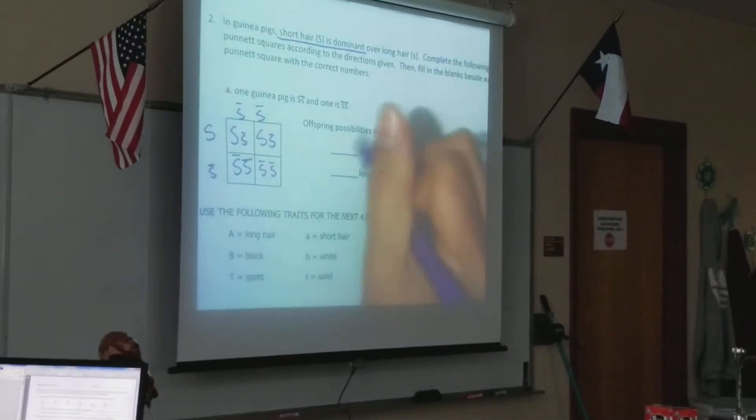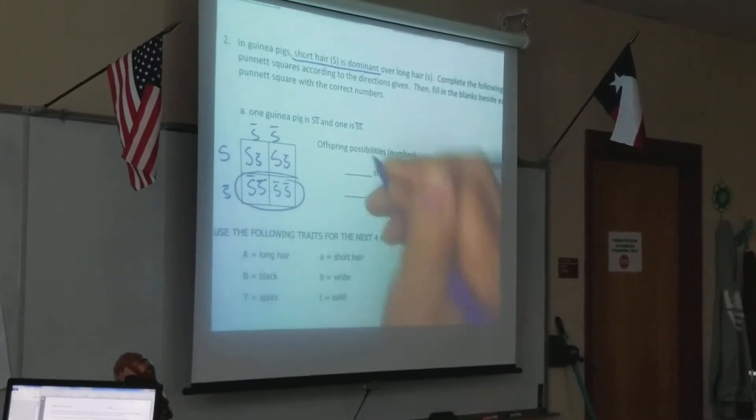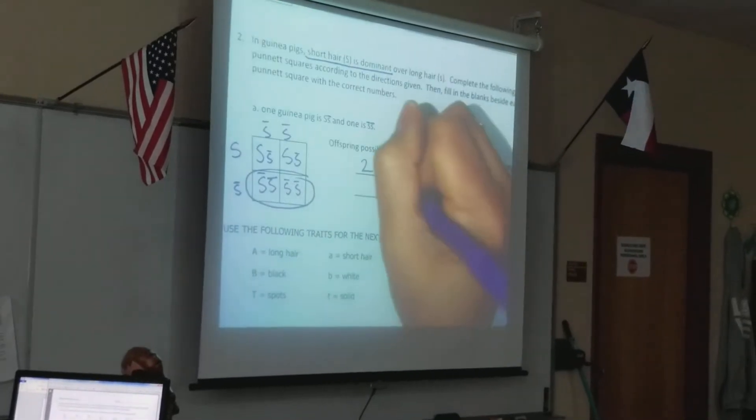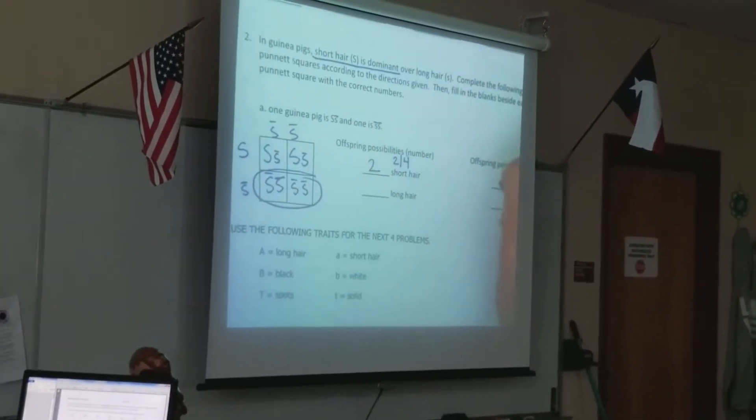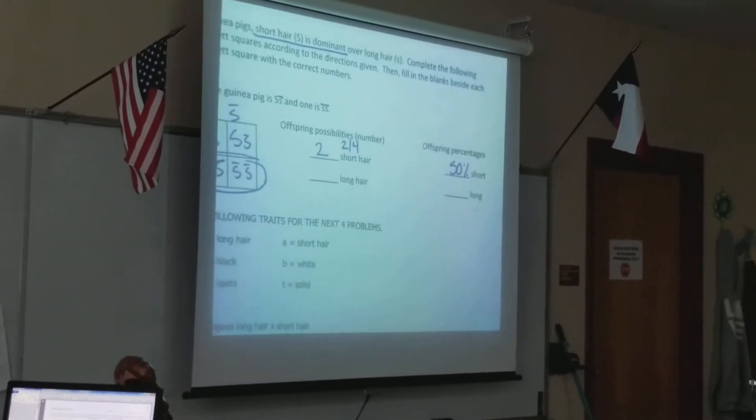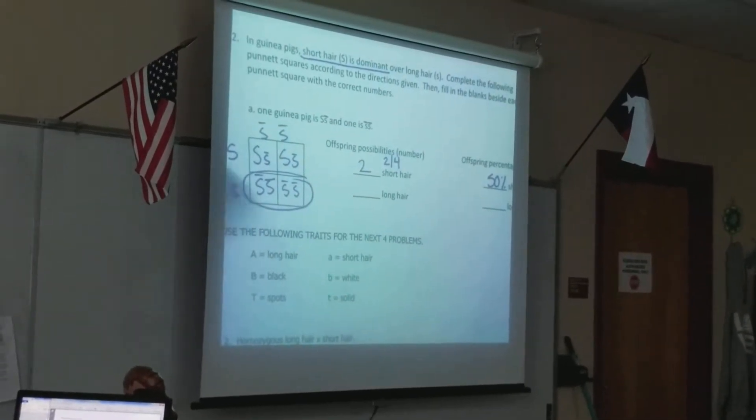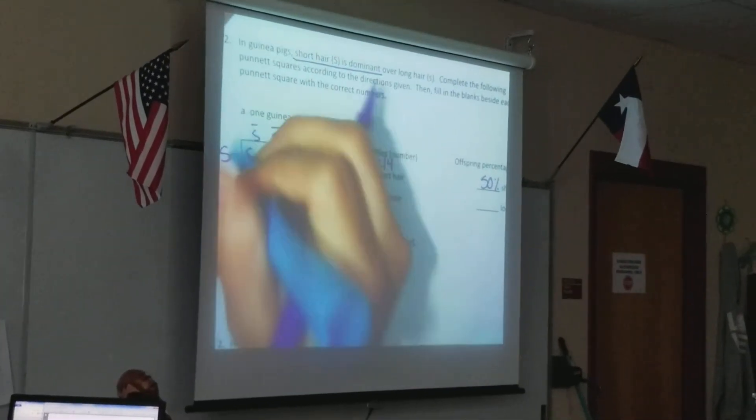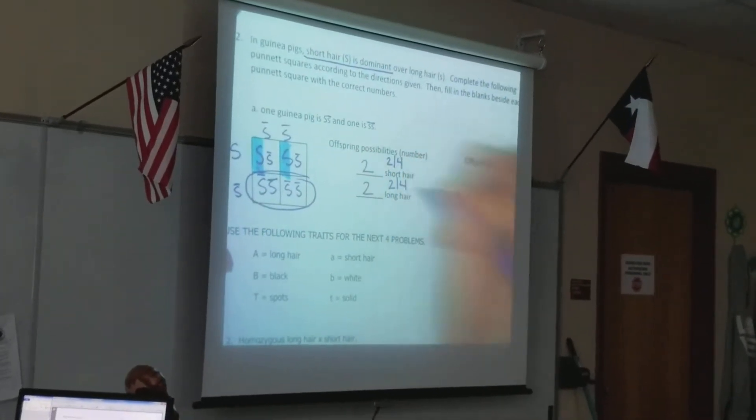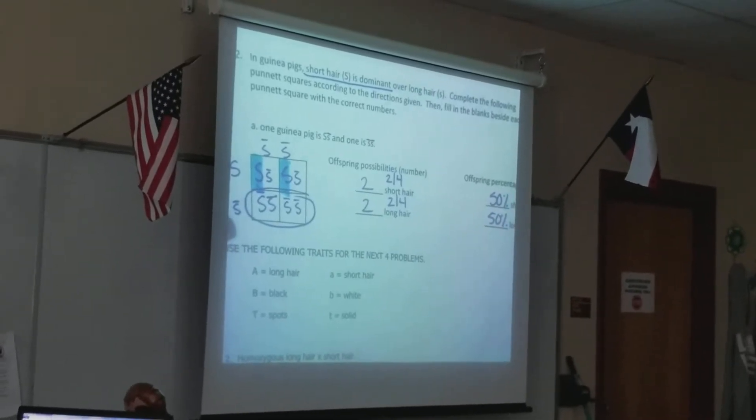So if I'm asked to give how many are going to have short hair, well here I have two that are going to have short hair. Or you could even say two out of four, which equals 50%. Where it asks about long hair, all I need is one of these dominant alleles. There it is, there it is. So I'm going to have two or two out of four that are going to be long hair. Easy enough?